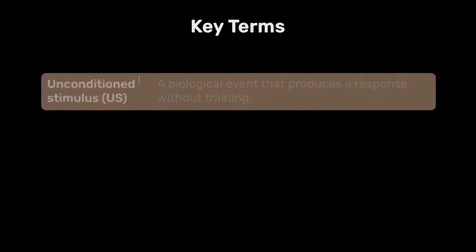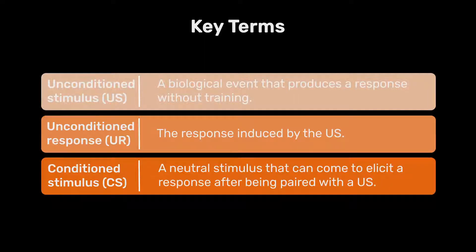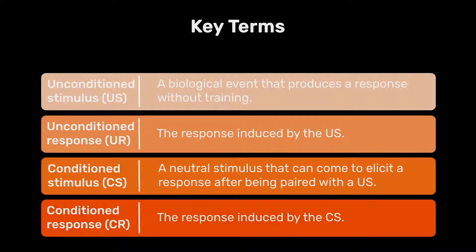This may seem like a relatively simple experiment, however Pavlov reported it using four key terms which have incredible explanatory power. The unconditioned stimulus refers to a stimulus of biological significance — in Pavlov's study, the food. The unconditioned response refers to the response produced when the unconditioned stimulus is presented — in this case, salivation to the food. The conditioned stimulus refers to the neutral stimulus, such as the bell or metronome, and the conditioned response refers to the salivation to the bell or metronome once the association has been learned.